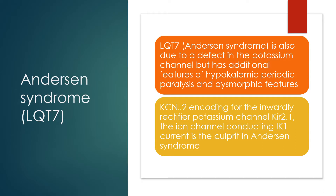LQT7, or Anderson syndrome, is also due to a defect in a potassium channel, but has additional features of hypokalemic periodic paralysis and dysmorphic features. KCNJ2, encoding for the inwardly rectifying potassium channel Kir2.1 — the ion channel conducting the IK1 current — is the culprit in Anderson syndrome.